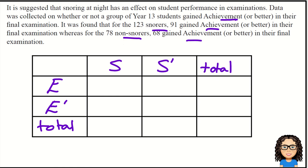We've got 123 snorers, so there's my total. For those 123 snorer students, 91 gained achievement or better. Then, they've got 78 non-snorers, and 68 of those gained achievement or better.